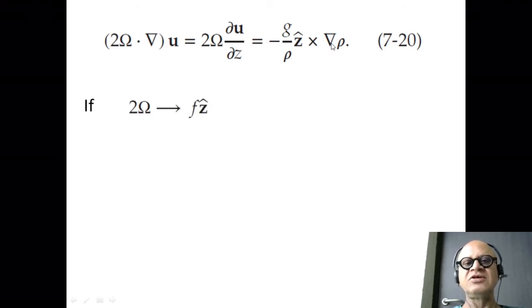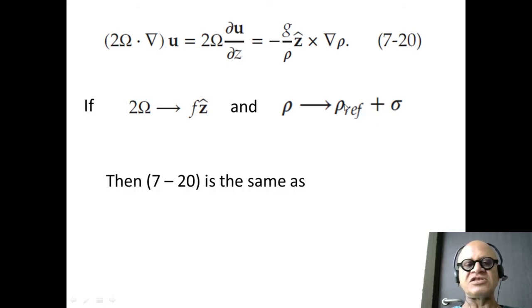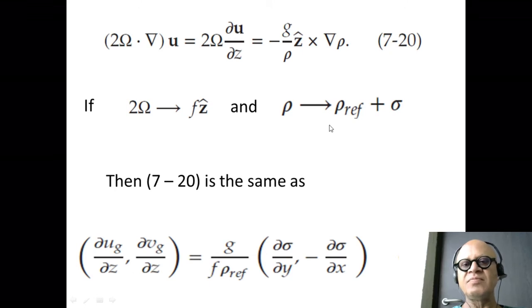If we then take our 2 omega as f z hat to make life simpler and replace our rho with ρ_ref + σ, which is the deviation from reference density, has to be small compared to rho ref, as you remember. Then 7-20, this equation is essentially the same as this one. We have written grad rho here, but grad rho is essentially for this case dσ/dy minus dσ/dx.